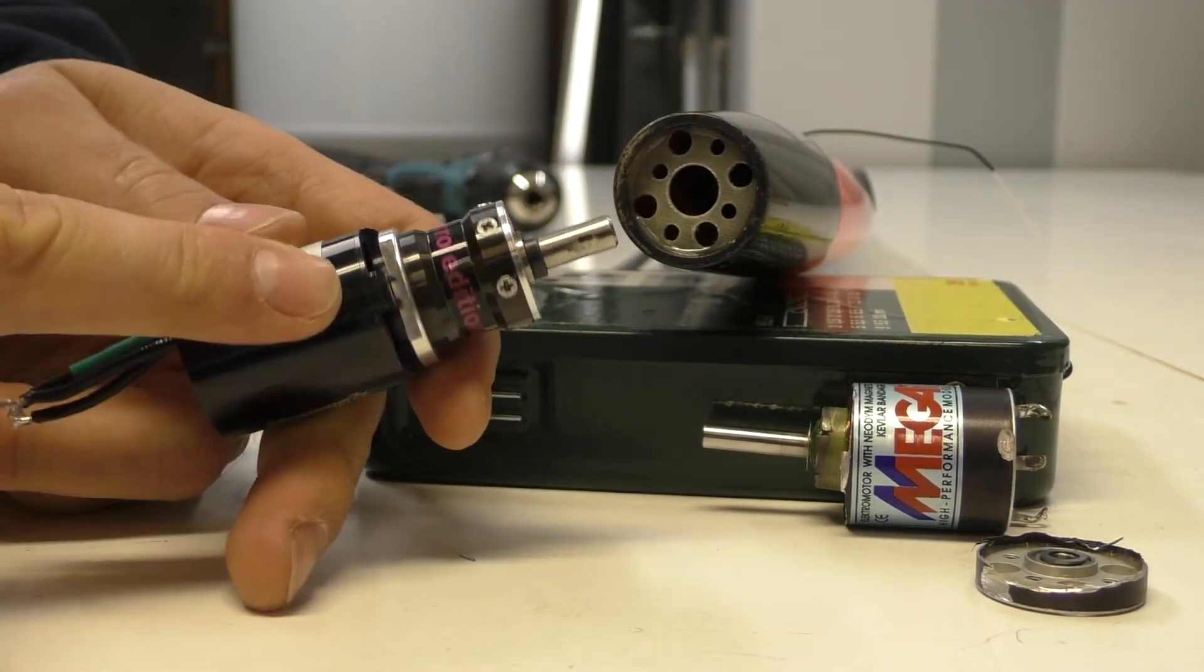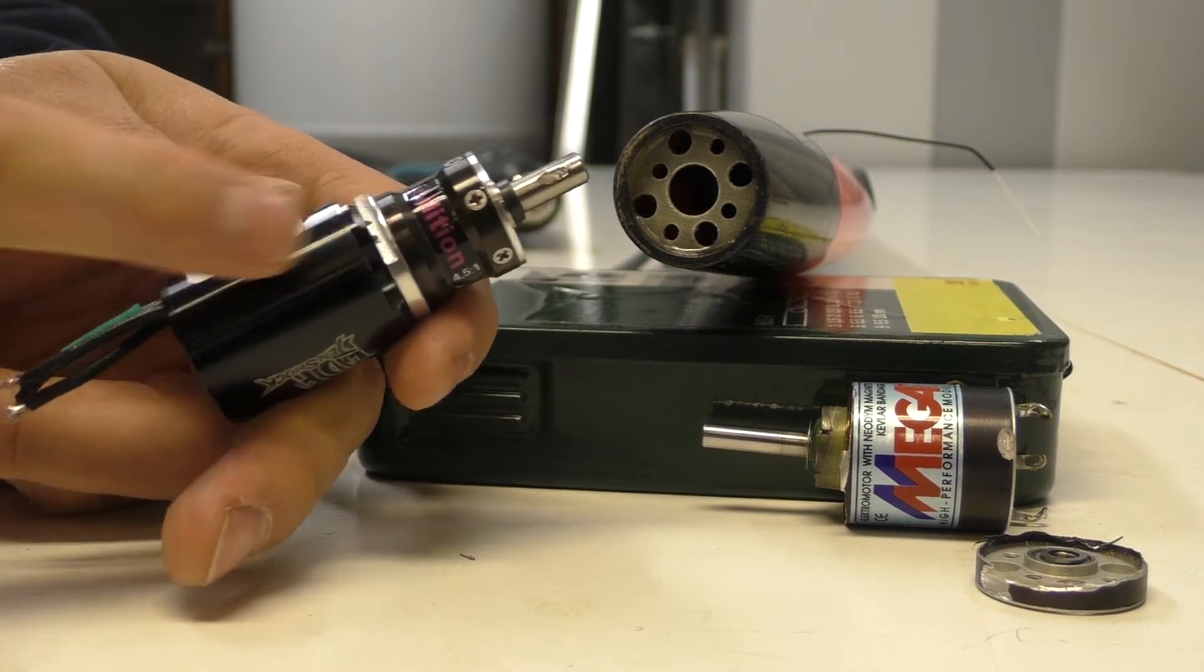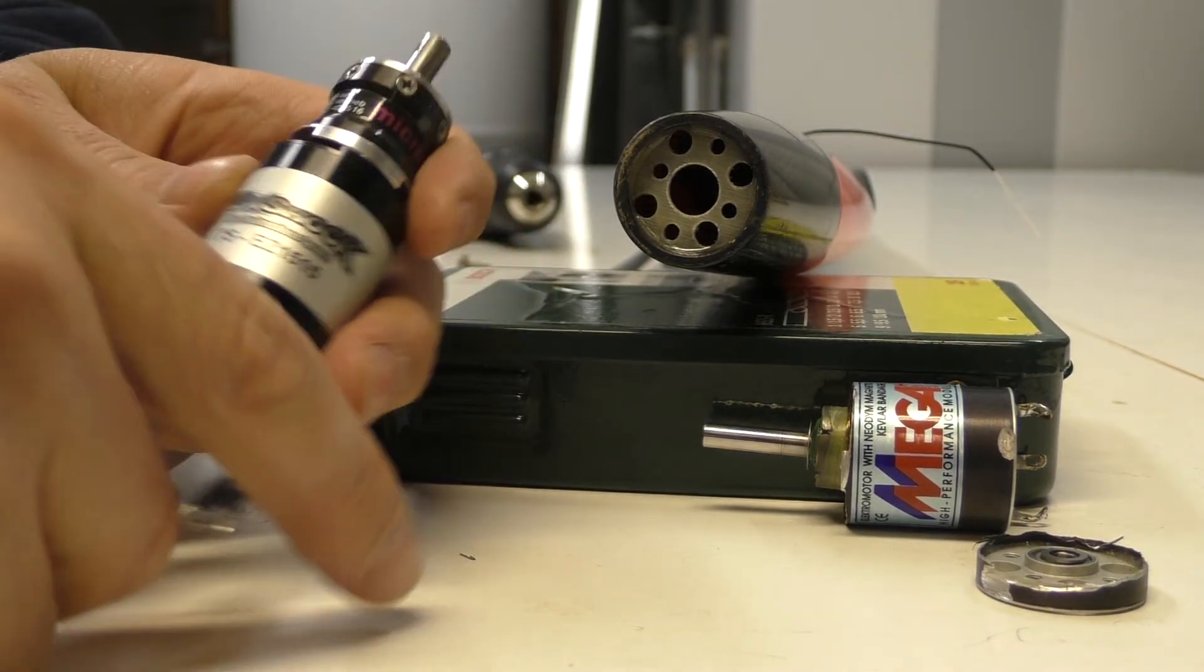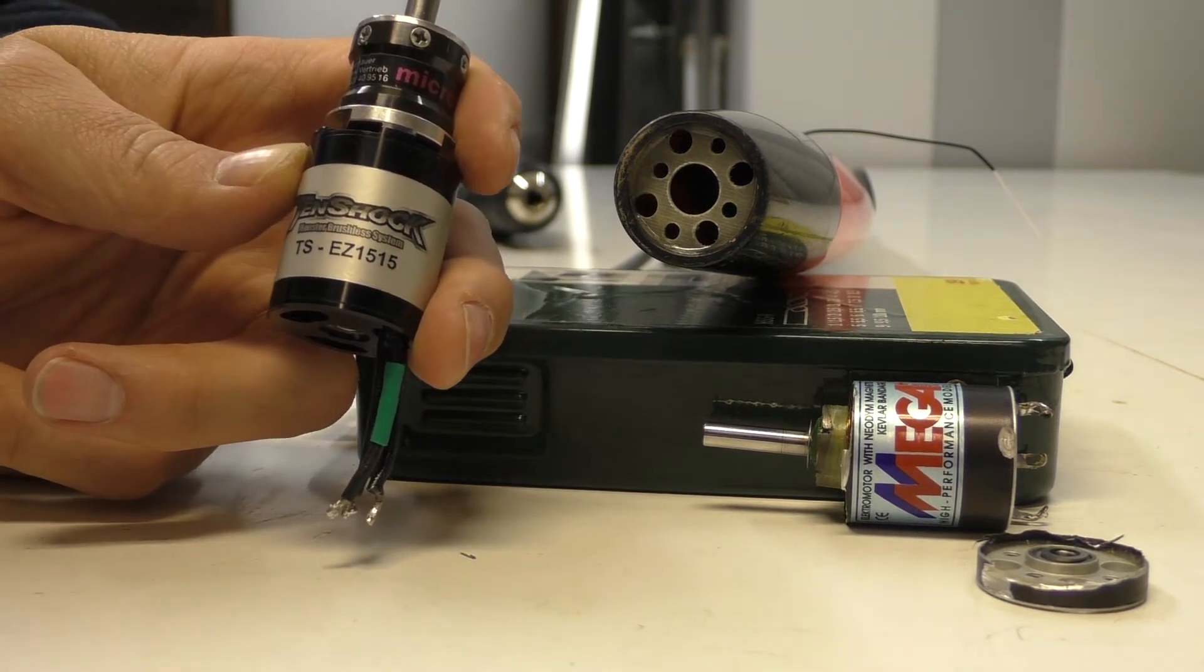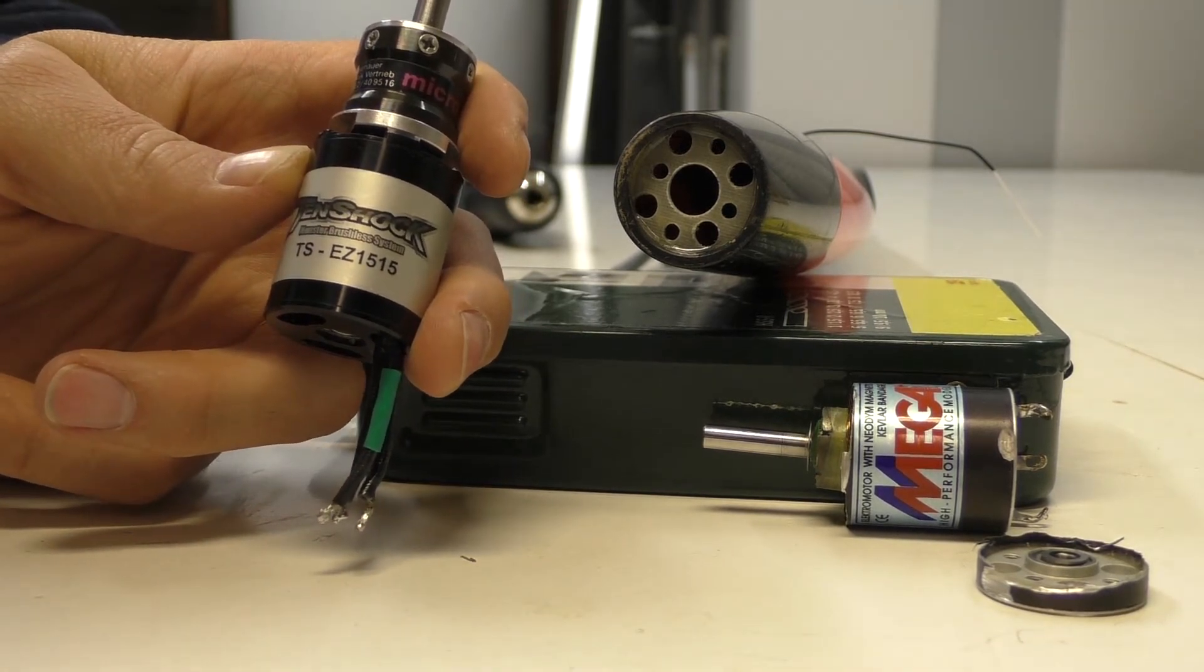Ryzenauer gearbox, this is actually 4.5:1, one to 4.5, with a 10 shock TS EZ-1515. So is it 3770 KV?